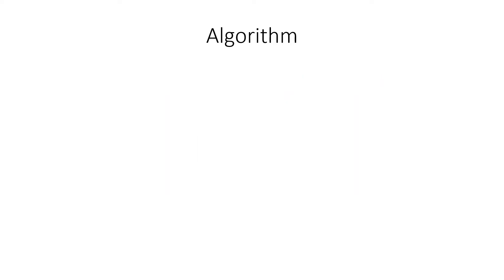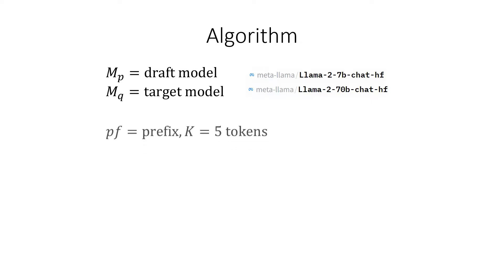Now let's talk about the algorithm. So first some notation. We're going to call MP the draft model, and MQ the target model. Just in case you're confused which one is which, the target model is the bigger one and the model that you want to emulate, and the draft model is an order of magnitude faster and smaller. We also need a prefix string to complete the sequence, which we'll write as PF. And K is the number of tokens we want to generate in one pass, which let's assume is five.